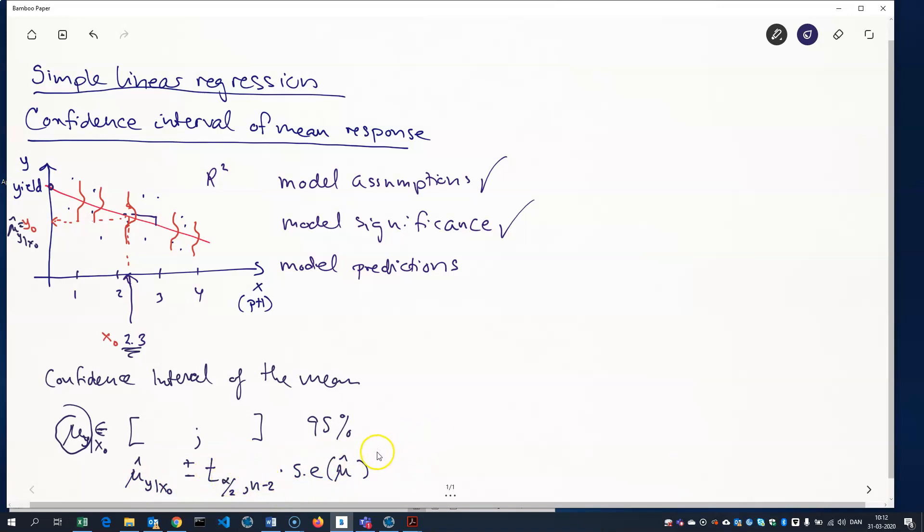And we compute it like this. It's the square root of the variance estimate multiplied by 1 over n plus x0 minus the mean of x squared divided by the sum squared deviation of the x data points, the x values. That's how we compute it. We won't derive this equation. Maybe I'll do it in a different video. But for now, that's fine. And let's see if we can do this in Excel.